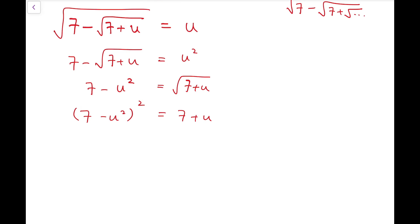And simplifying, we have u to the power 4 minus 14 u squared plus 49 equals u plus 7. And finally, we have u to the power 4 minus 14 u squared minus u plus 42 equals 0. So, this is the quartic polynomial that we're expecting.